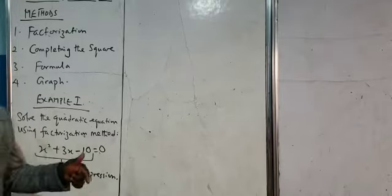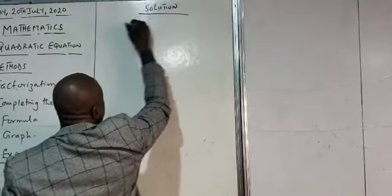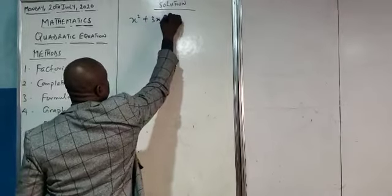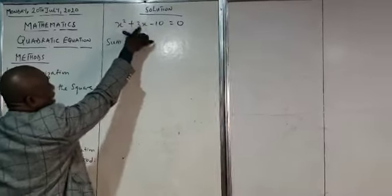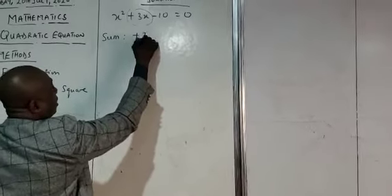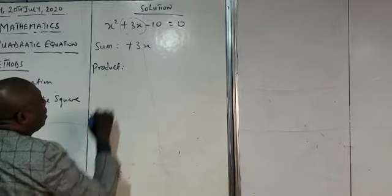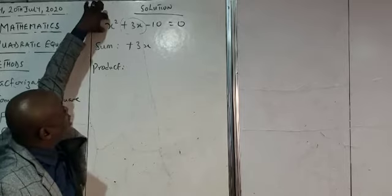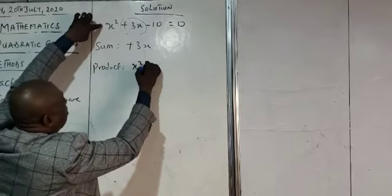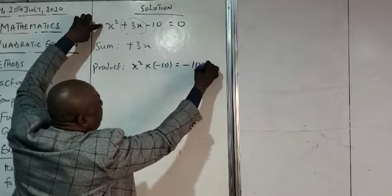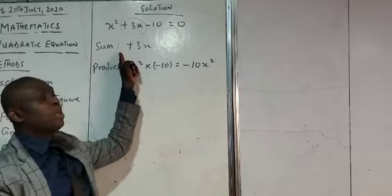So we are going to factorize that using the sum and the product. So we have the solution x squared plus 3x minus 10 equals 0. So I am using the sum. The sum we have here is the middle number which is plus 3x. Now the product becomes the multiplication of the coefficient of x squared and the constant. Here we have that as x squared times minus 10. And that will give us minus 10x squared. Now how do we get the two factors that will give us the sum as well as the product?